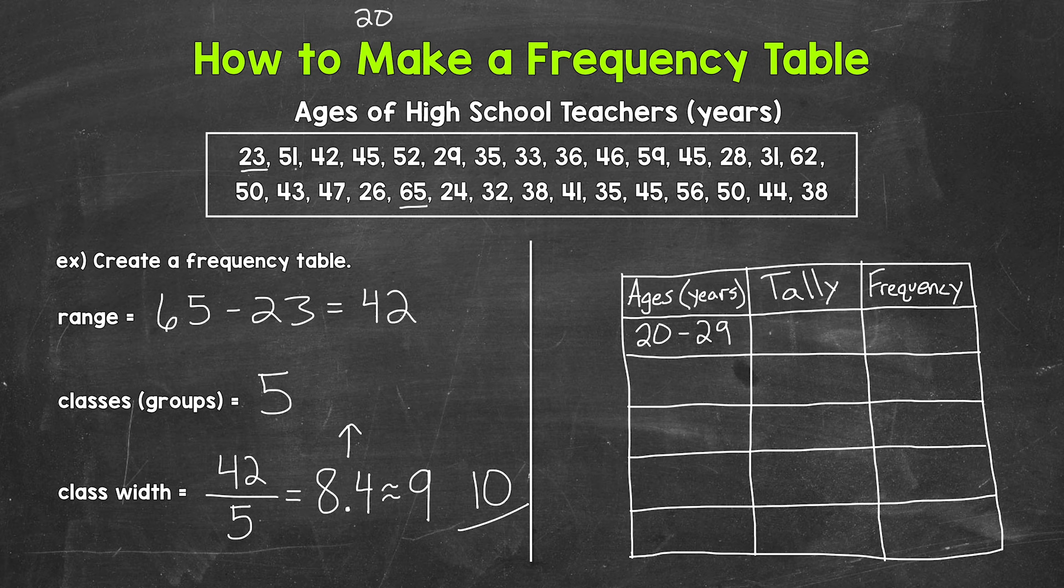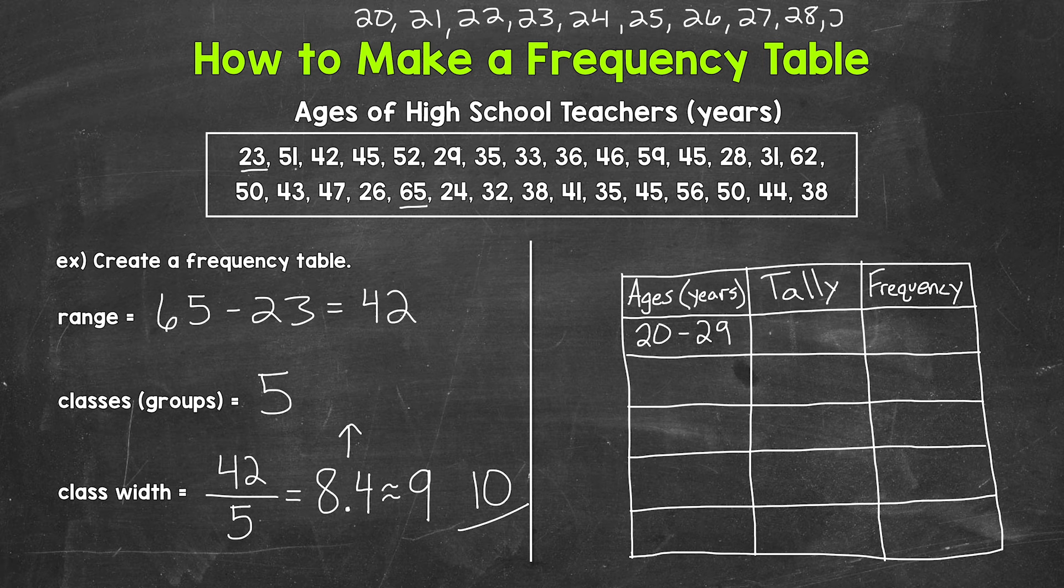I'll write them out up top: 20, 21, 22, 23, 24, 25, 26, 27, 28, 29. That's 1, 2, 3, 4, 5, 6, 7, 8, 9, 10. So our class width is 10 there. So that's something to keep in mind and be careful with.